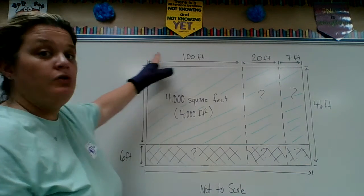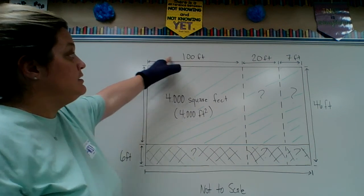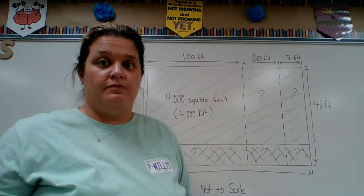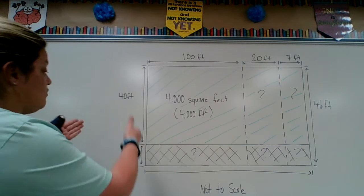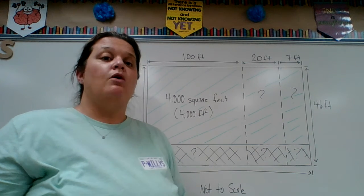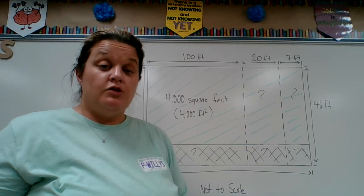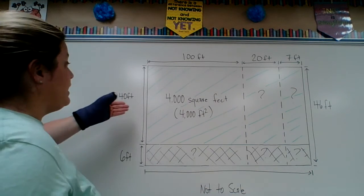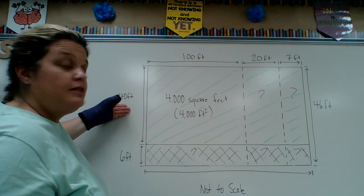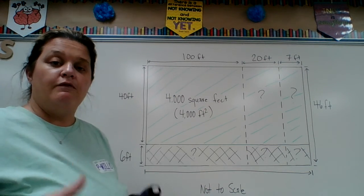So right here we have the length — how long something is. We have 100 feet, 20 feet, 7 feet. So they have given us our widths and our lengths. What they want is the total number of square footage. Square footage is when you multiply the width times the length. And they did the first plot for us.